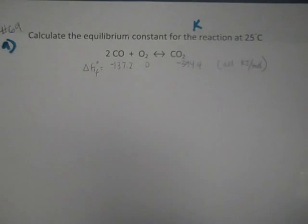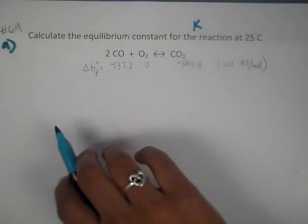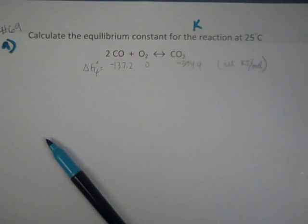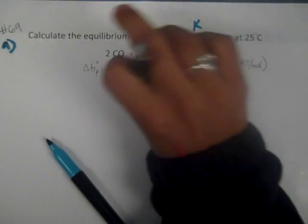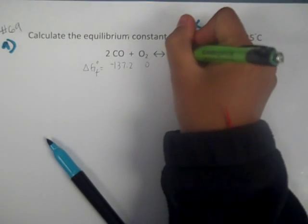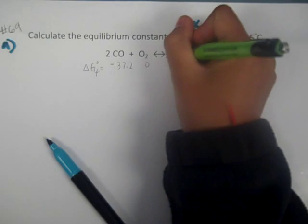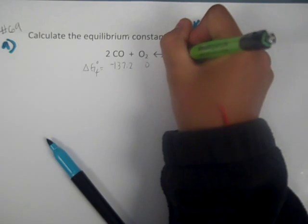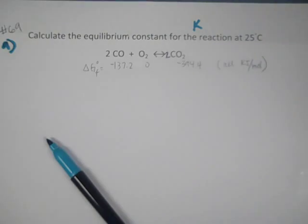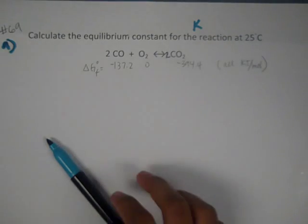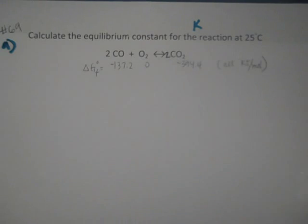Remember, we need to make sure it's balanced. So we're going to put a 2 in front of the CO and CO2, and then it should be balanced.